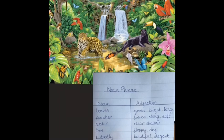Now we've had a close look at adjectives, we're going to have a look at how we can use them with nouns to make a noun phrase. A noun phrase makes our sentences sound very interesting, and it's a group of words which includes a noun and any words that describe it.